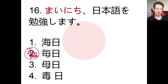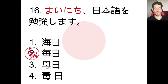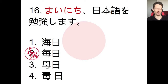This character means ocean; this character means every; this character means mother; and this character means poison. So maybe you got poisoned by your mother — I'm not sure how whoever came up with that character decided. Anyway, the character we want here means every.